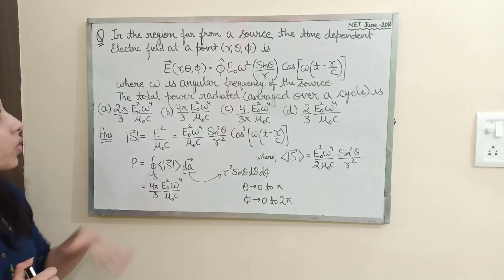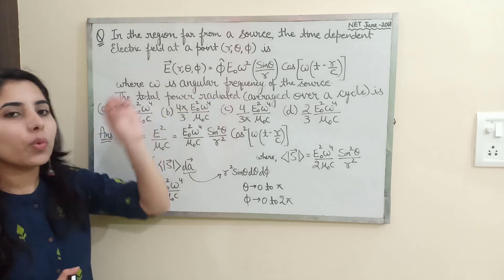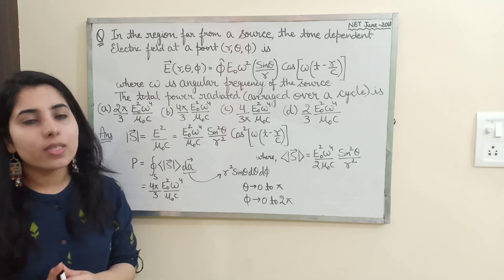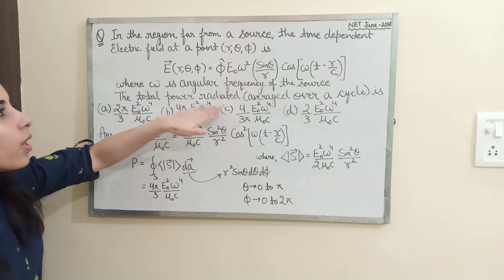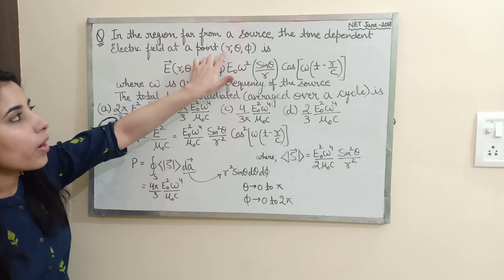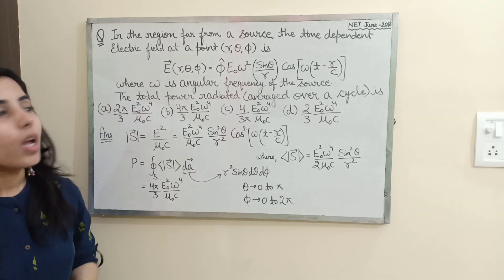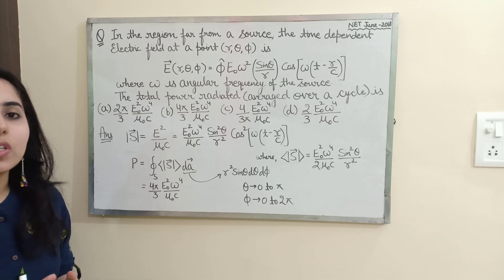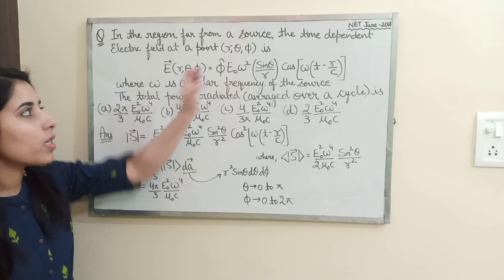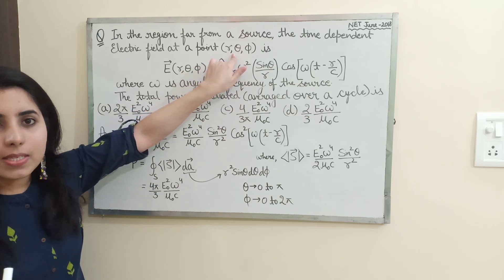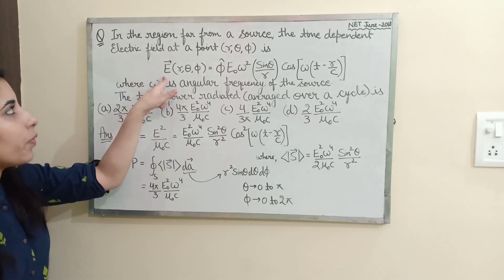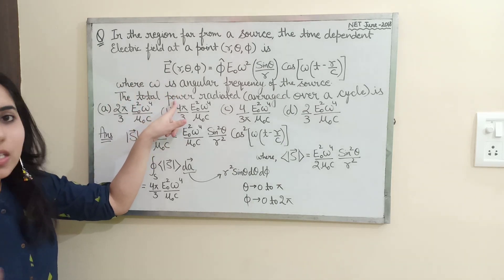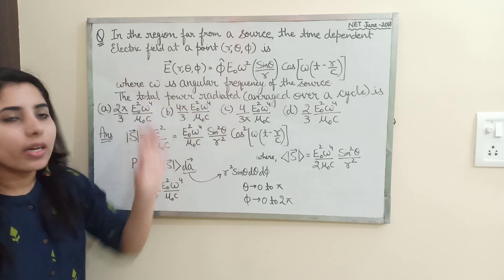Now, what are the important things in this question on which we need to focus? When reading the question, the first thing is which coordinate system has been used. It is going to be a spherical polar coordinate system r, θ, and φ. After that, the electric field expression is given to us, and they have asked you to find the total power radiated.